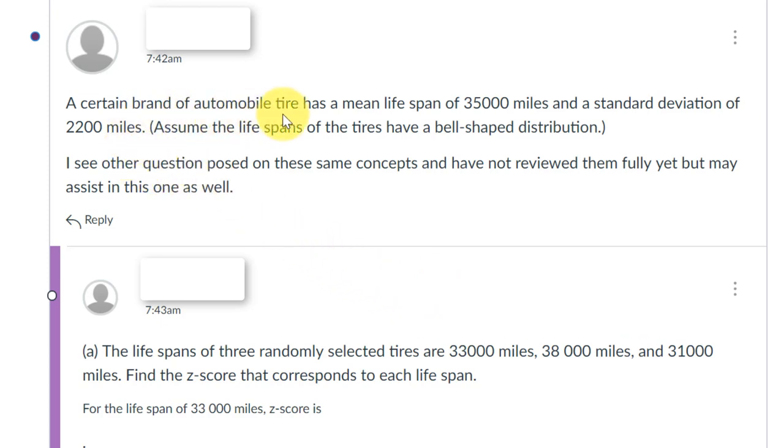The particular problem is about automobile tires and we're given a mean lifespan of 35,000 miles for a certain brand. So we need to be sure to recognize that means this is a population mean μ of 35,000 and a population standard deviation σ of 2,200 miles.